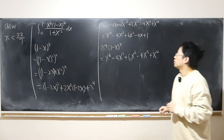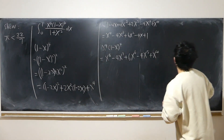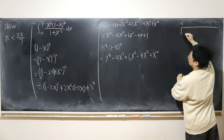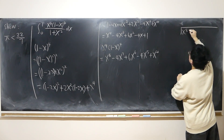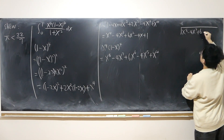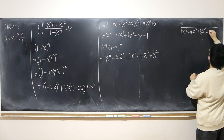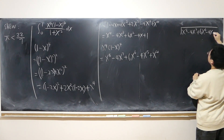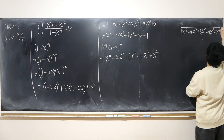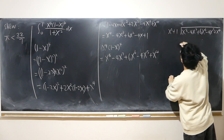Now we can do long division — dividing x^8 minus 4x^7 plus 6x^6 minus 4x^5 plus x^4 by (x² + 1).